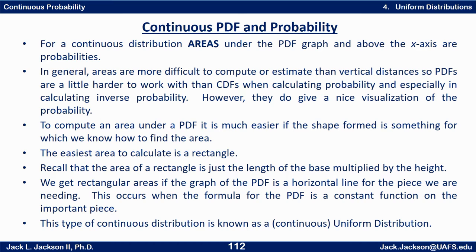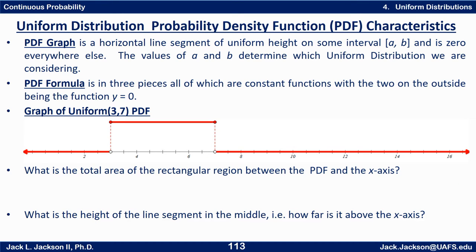Or if we want to be more specific, a continuous uniform distribution, because we had a sort of discrete uniform earlier. So here's what it looks like for the PDF: The PDF graph is a horizontal line segment of uniform height on some interval from a to b and is zero everywhere else. The values of a and b determine which uniform distribution we're considering.